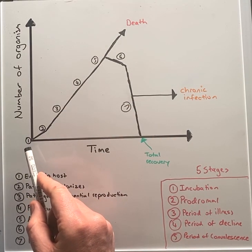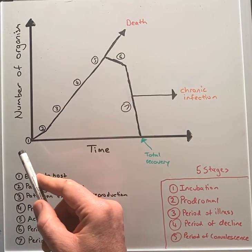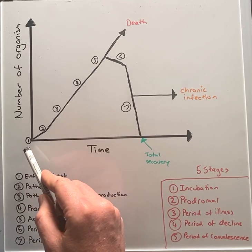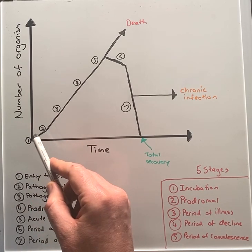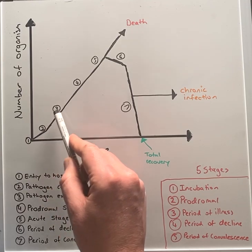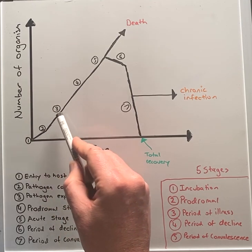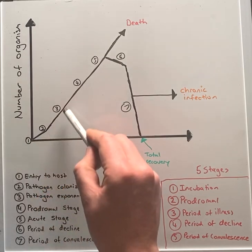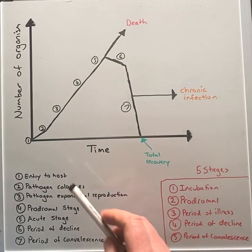Starting with step one, the microorganism must first gain entry into the body. Then the microorganism must find a hospitable place in the body to enable and start a colony. Step three, the microorganism can start reproducing. These three steps are known as the incubation phase.